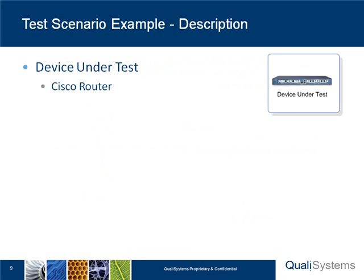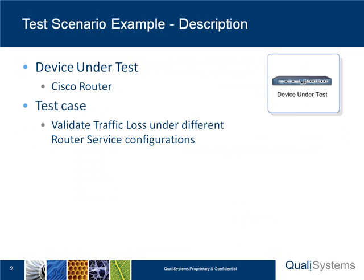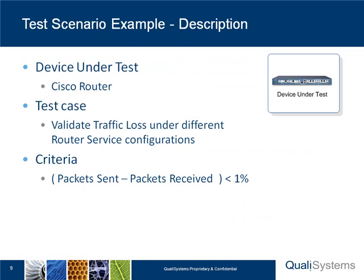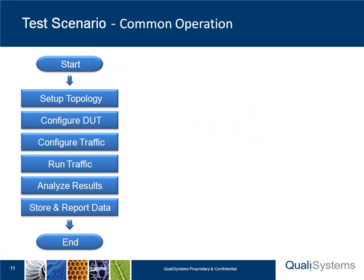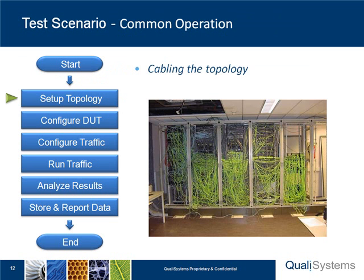Our device under test is a Cisco router. What we want to check is that there's no traffic loss. The criteria: packet sent minus packet received is less than 1%. I need to set up a topology, so I need to connect ports from traffic generators to the different ports on the Cisco device under test. Once I have that connected, I can start with my different steps in the test — first, cabling everything up together.